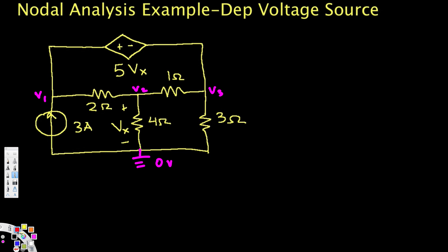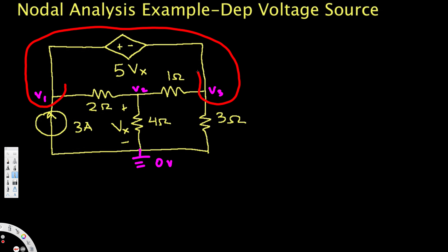When we have a voltage source, we take the whole thing as a supernode. We then apply Kirchhoff's Current Law to this supernode, looking at all the currents entering and exiting. Currents entering must equal currents exiting — that's Kirchhoff's Current Law.